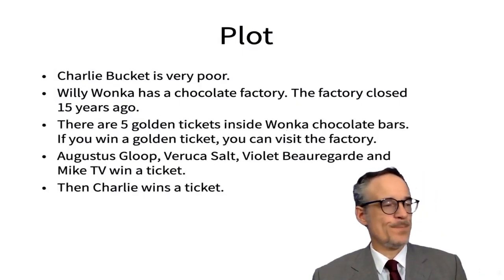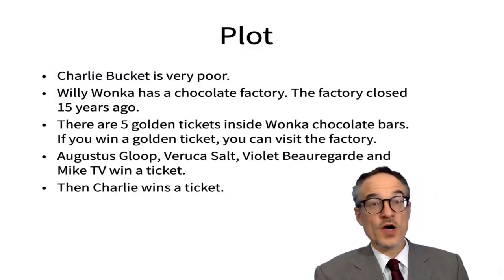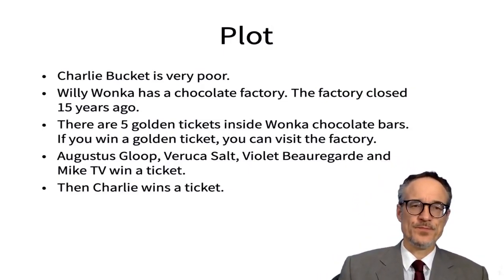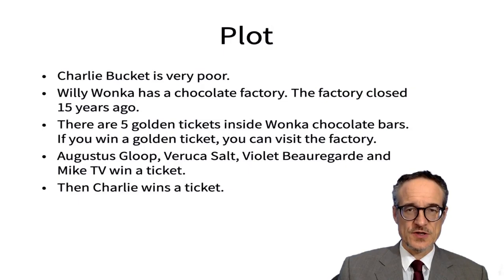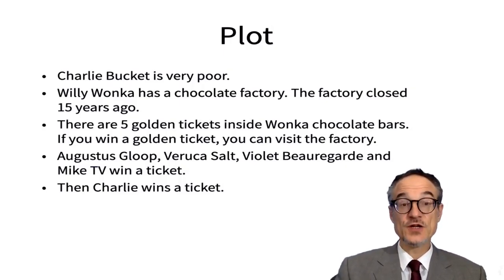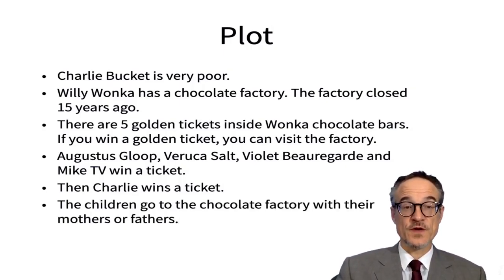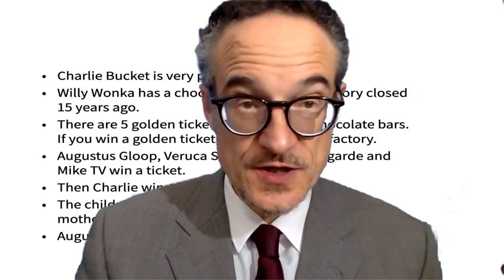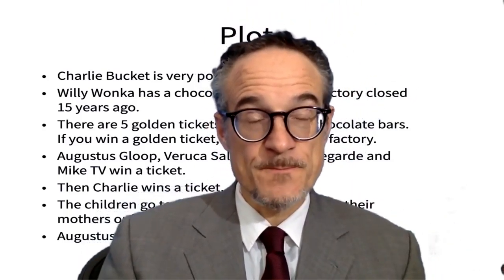Charlie Bucket is very poor. Willy Wonka has a chocolate factory. The factory closed 15 years ago. There are five golden tickets inside Wonka chocolate bars. If you win a golden ticket, you can visit the factory. Augustus Gloop, Marika Sobbs, Violet Bowie D'Art, and Mikesell B win a ticket, then Charlie wins the ticket. Augustus falls into a chocolate lake. You may know this story. This is Charlie and the Chocolate Factory.